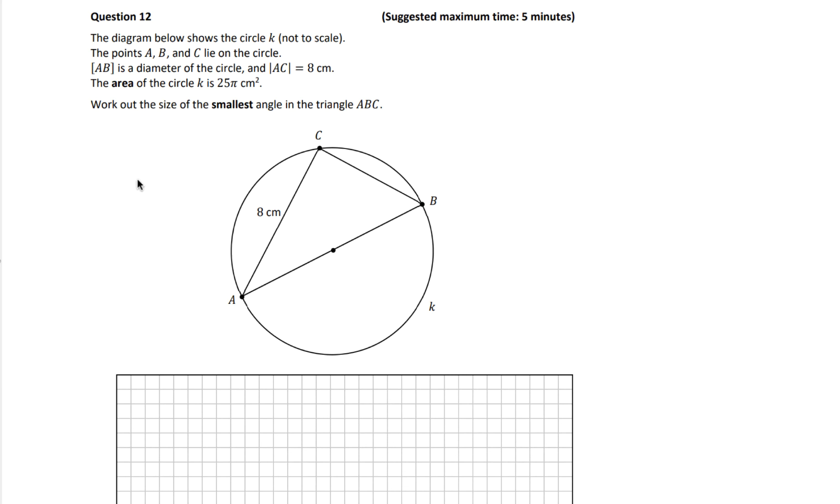Welcome to O'Reilly Maths. This is the 2022 Junior Cert Higher Level Paper 1, and we're looking at question number 12. The diagram below shows the circle K, not to scale. The points A, B, and C lie on the circle. You can see them here. AB is the diameter of the circle.